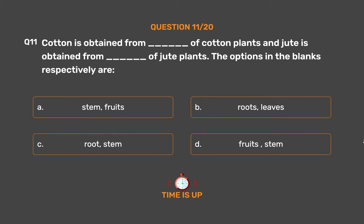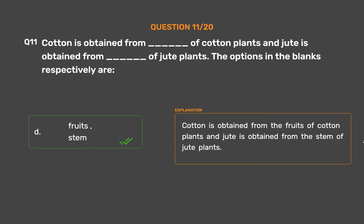The correct answer is Option D, Fruits and Stem. Cotton is obtained from the fruits of cotton plants and jute is obtained from the stem of jute plants.